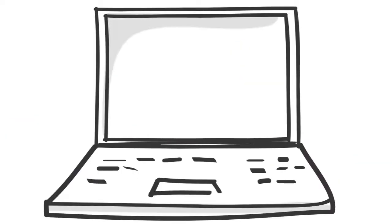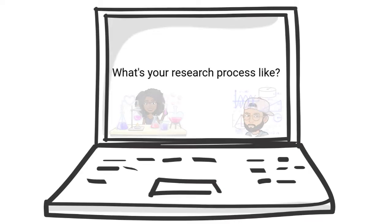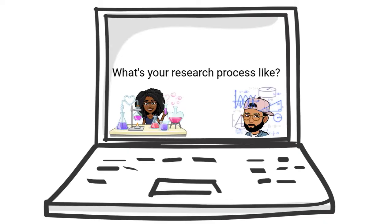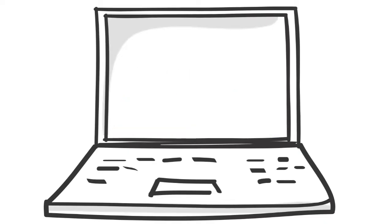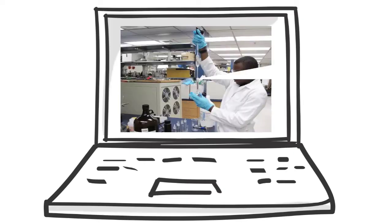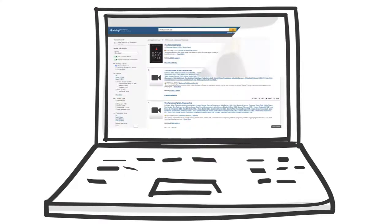So, what comes to mind when you think of the research process? What does your research process look like? When the research process is being referred to or illustrated, the external aspects of research are usually highlighted. You might have imagined one of these aspects: working in a lab, conducting an in-depth interview, or searching through a library database.